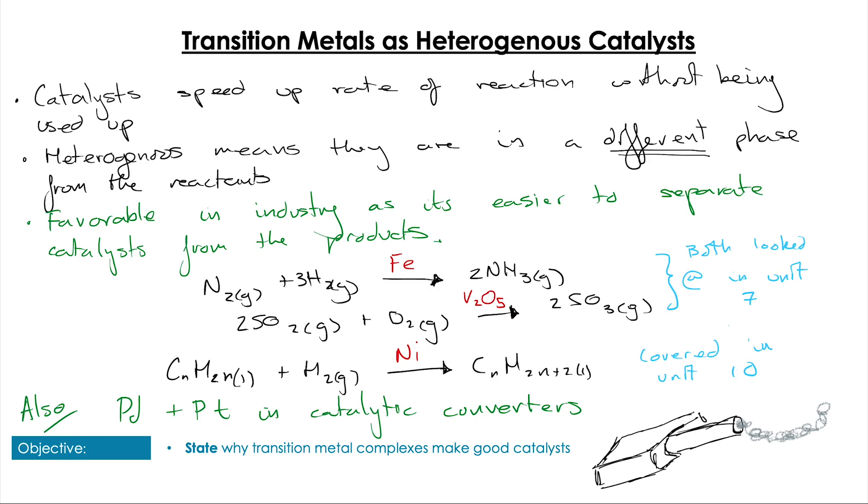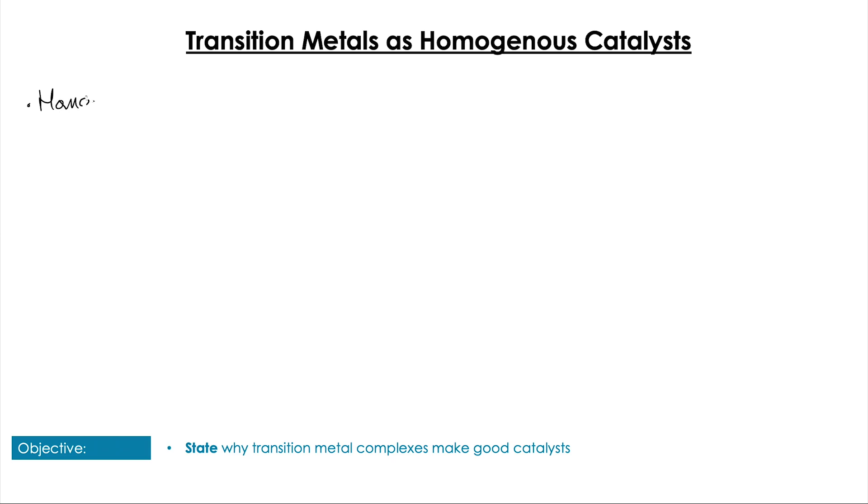Other transition metals such as palladium and platinum are used in the catalytic converters on cars—these help reduce the emissions coming out of combustion engine cars. Basically, the transition metals are all-round team players.